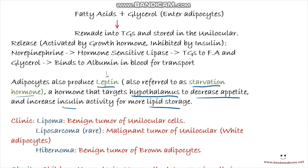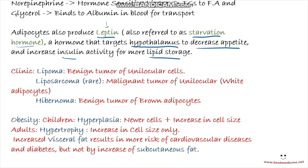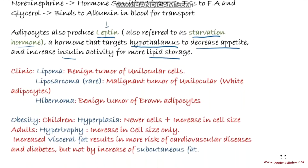Here are some clinical correlates. A benign tumor of white adipocytes — unilocular white adipose tissue cells — is called a lipoma. A malignant tumor of unilocular white adipocytes is called a liposarcoma, which is quite rare.